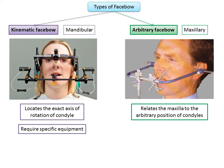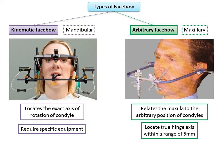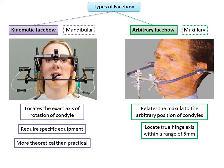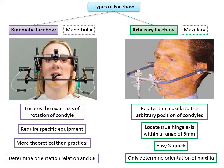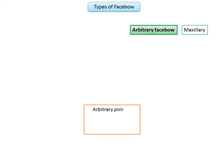The benefit of the kinematic face bow is that it locates the hinge axis physiologically with exceptional accuracy, whereas the arbitrary face bow can locate the true hinge axis within a range of five millimeters. Because the kinematic face bow is cumbersome, requires special equipment, skill, and is time-consuming, its use is more theoretical than practical. The arbitrary face bow is easy to use and commonly used in clinical practice. In cases where we need to determine orientation relation and centric relation, we should use a kinematic face bow, whereas the arbitrary face bow only determines the orientation of the maxilla. The arbitrary face bow is commonly used for complete denture construction.